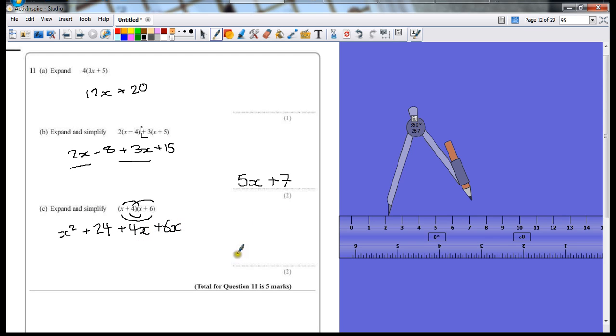Now we simplify it. Start off with the biggest terms, which is x squared. We're going to get one of them. So that's x squared. Next, gather your x's together. 4x plus 6x, which is plus 10x. And then your whole numbers, plus 24. There's your second mark.